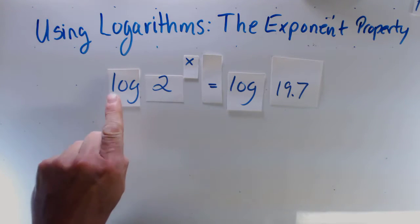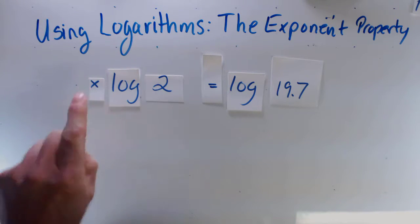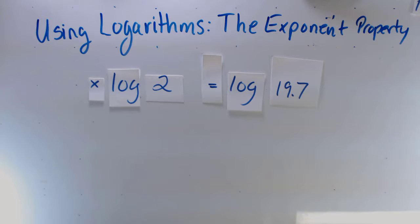or any base, log 2 to the exponent x, is the same as x times the log of 2. At this point, if you like, we can just evaluate the logs.